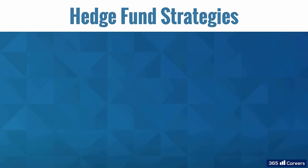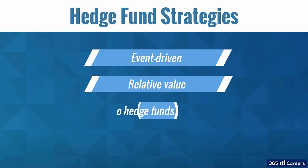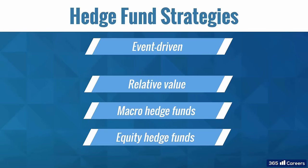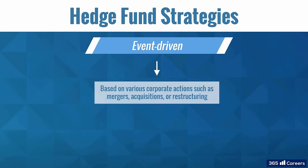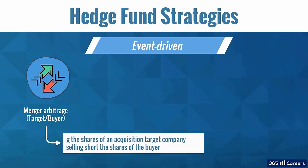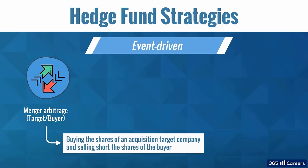We'll discuss four main categories of hedge funds: event-driven, relative value, global macro, and equity hedge funds. Event-driven strategies are based on various corporate actions such as mergers, acquisitions, or restructuring. They entail taking long or short positions in equity or debt securities of the companies involved. Merger arbitrage involves buying the shares of an acquisition target company and selling short the shares of the buyer. This strategy is expected to profit from the spread between prices of the respective shares, or from potential overpayment by the acquirer. The main risk involved here is that the deal may not close.